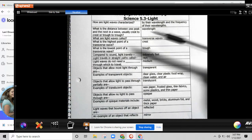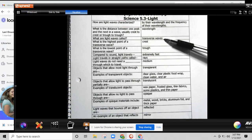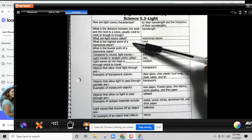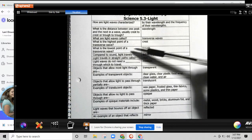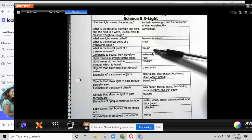What are light waves called? Transverse waves. What is the highest point of a transverse wave? A crest. What is the lowest point of a transverse wave? A trough.